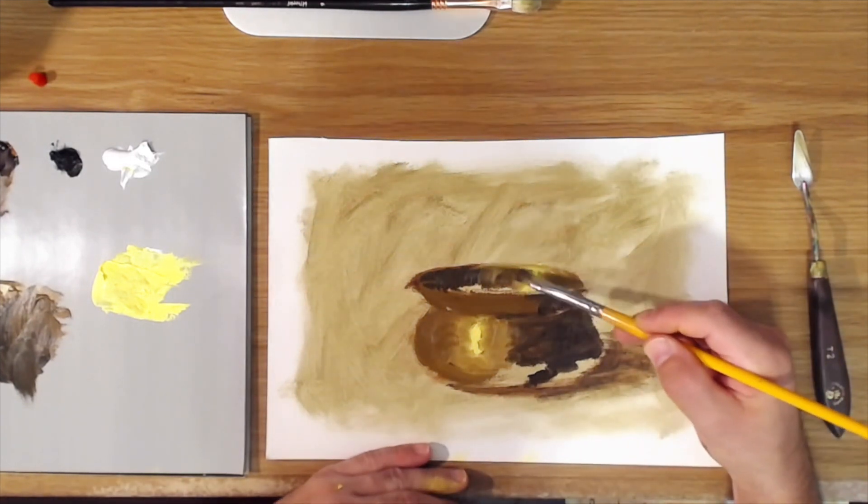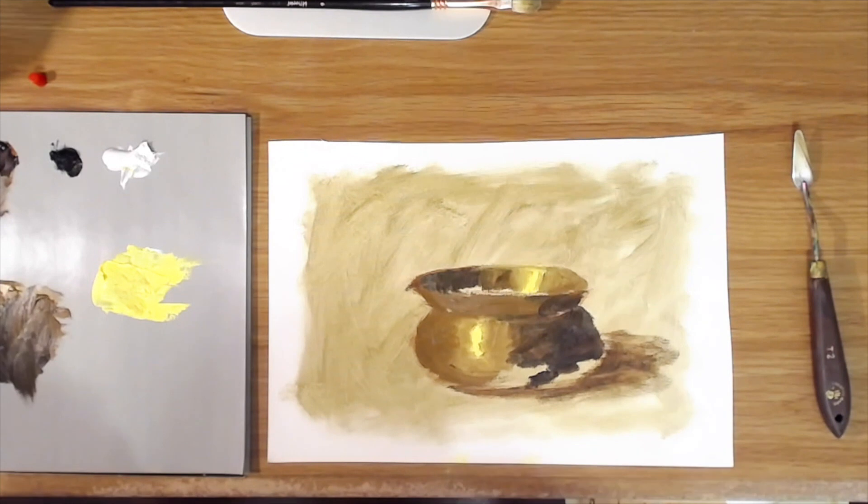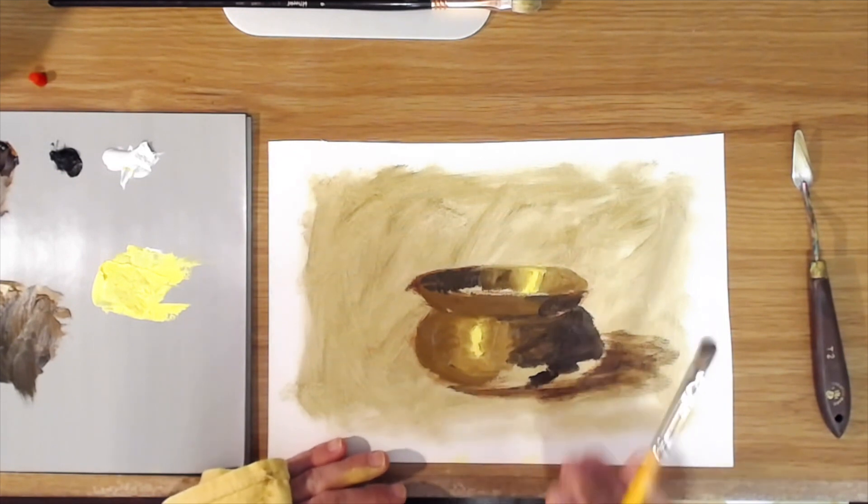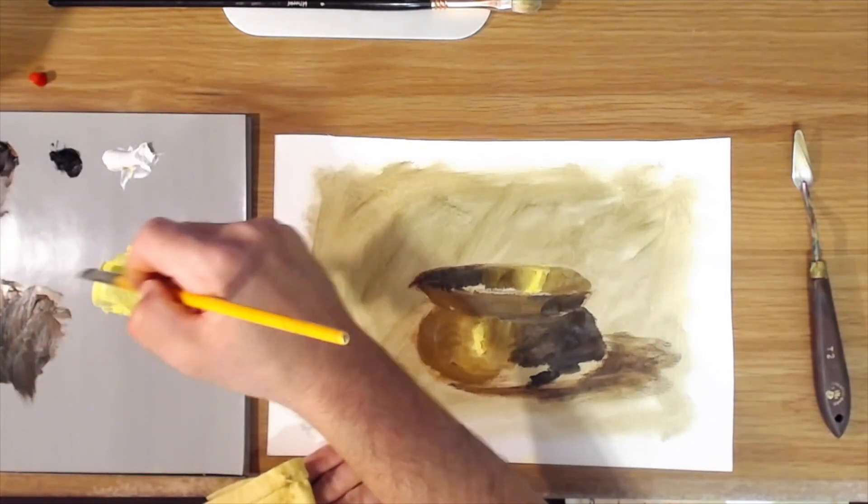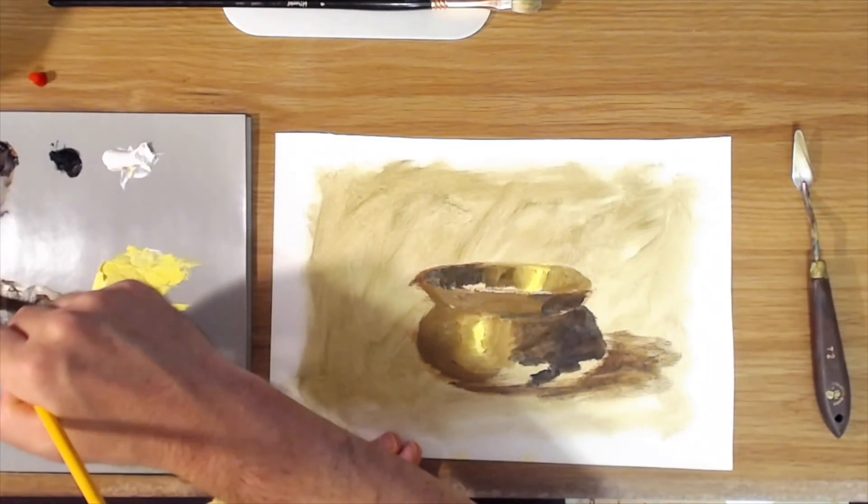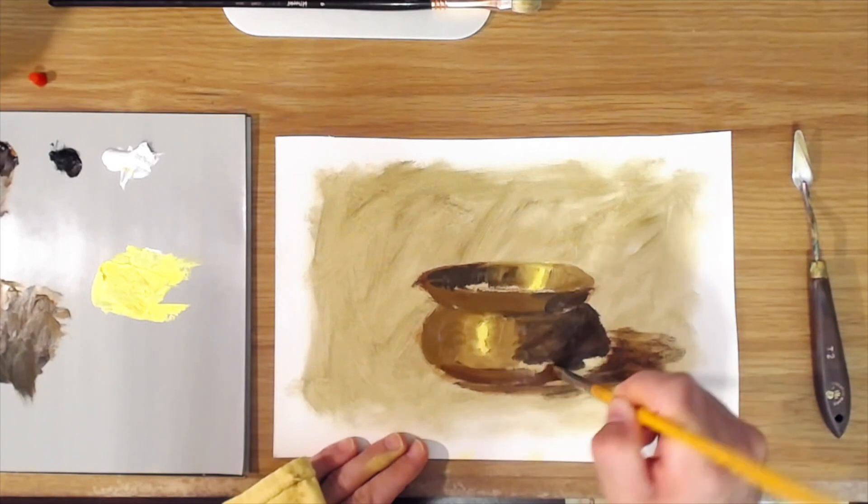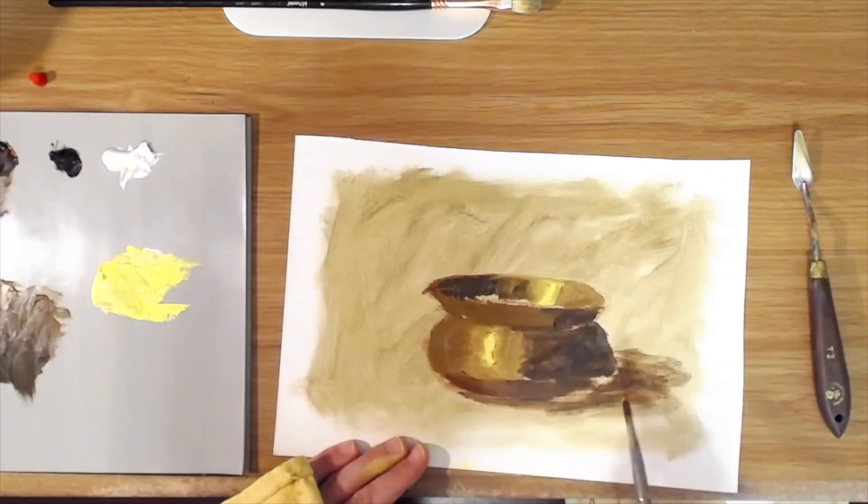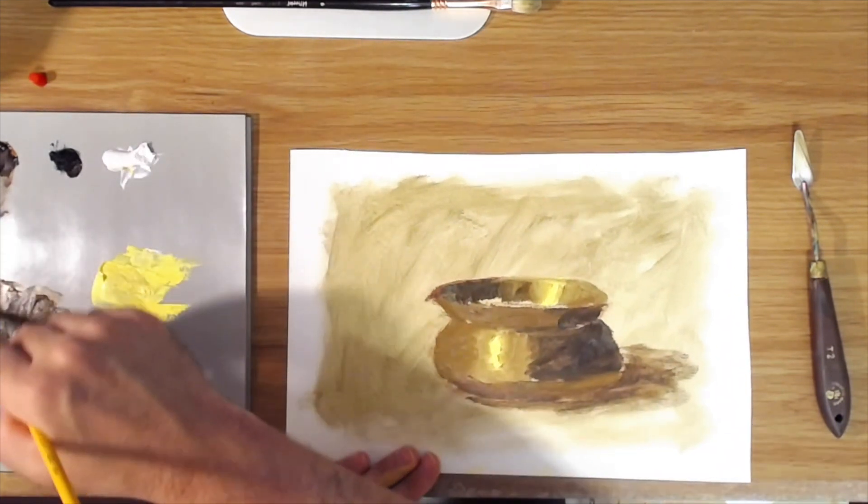Blend out that highlight again like we did with the other one. If you look at the picture of the bowl, this bottom plane is reflecting the light surface where the bowl is sitting, so it's going to get just a little lighter and warmer on that under plane. So we'll add a little bit more crimson, so it should get just a tad lighter in this area here, a little bit warmer.